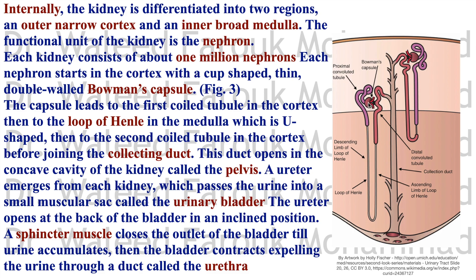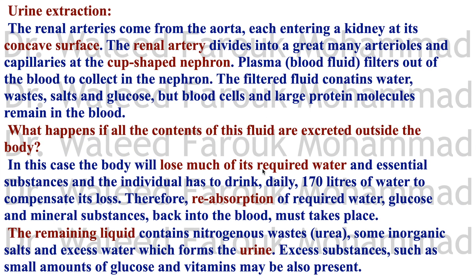Blood plasma is filtered at the Bowman's capsule, passing to the proximal coiled tubule, then the loop of Henle, then the distal coiled tubule in the cortex, and then the collecting duct where urine is formed. The ureters collect urine and carry it to the urinary bladder — a reservoir guarded by a sphincter. When urinating, the bladder contracts, expelling urine through the urethra to the outside.